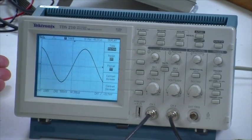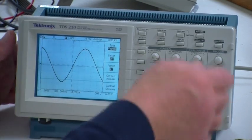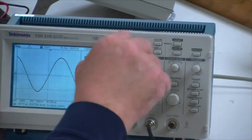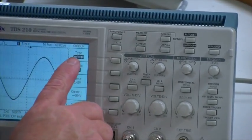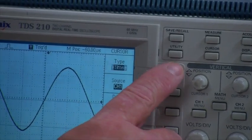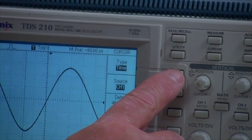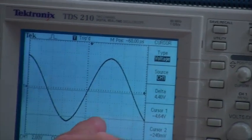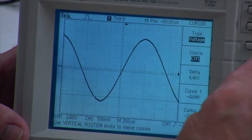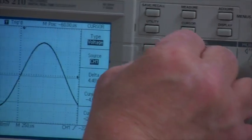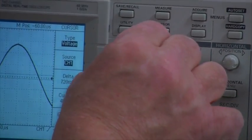For example, one of the most useful ones of all is the cursor menu. If you push the cursor menu, you have two options: one is voltage and one is time. For example, if I set it on voltage, I get two horizontal cursors controlled by the position knobs.